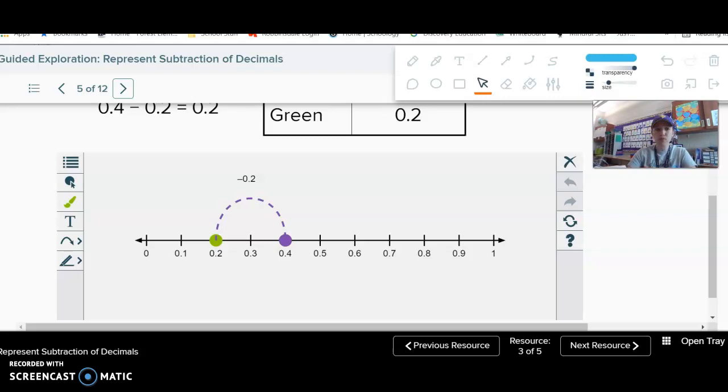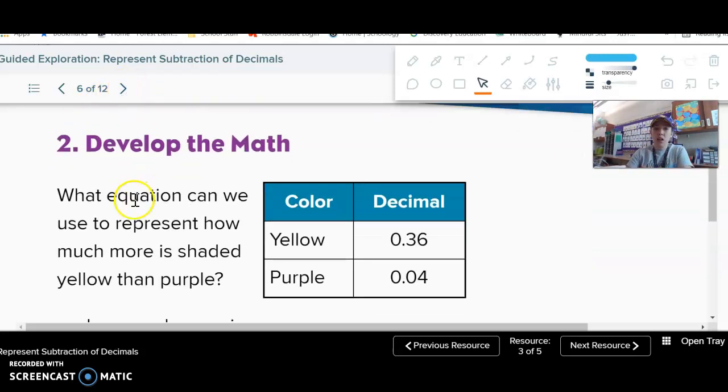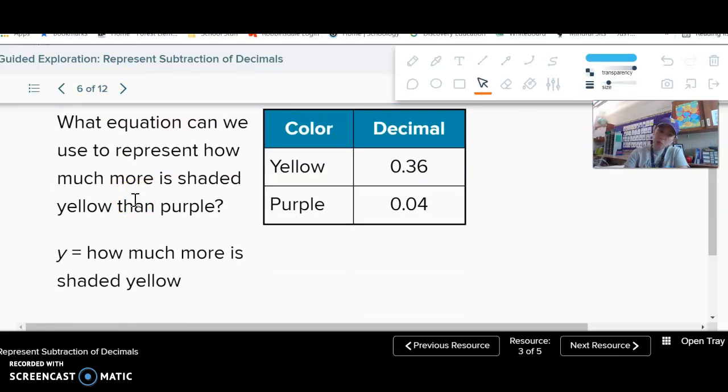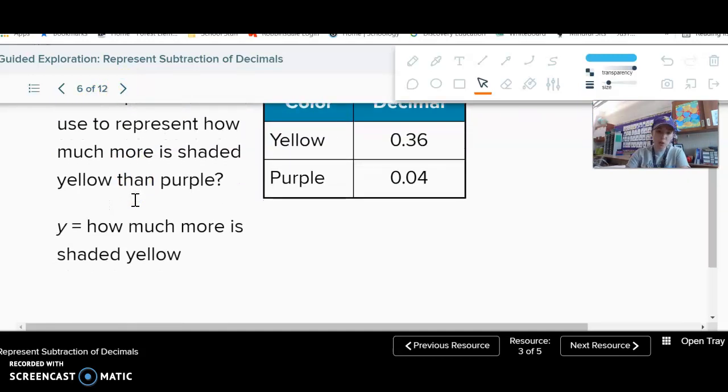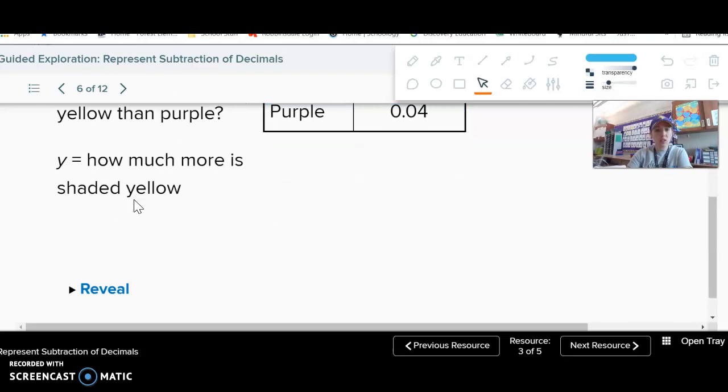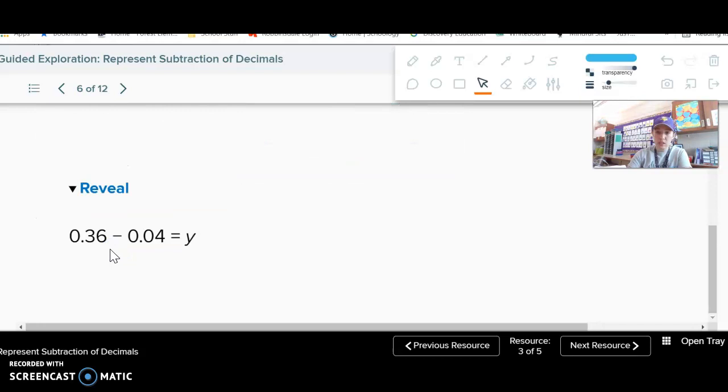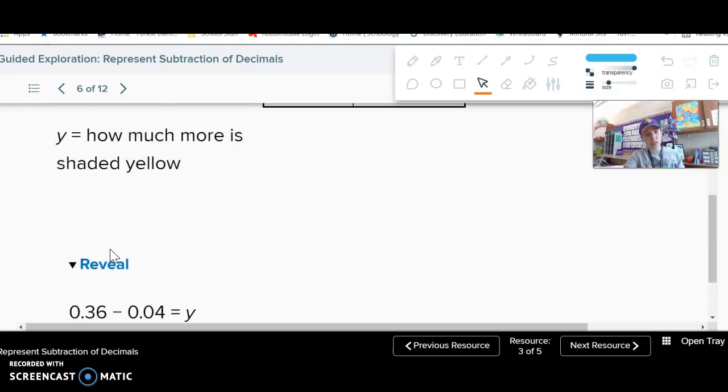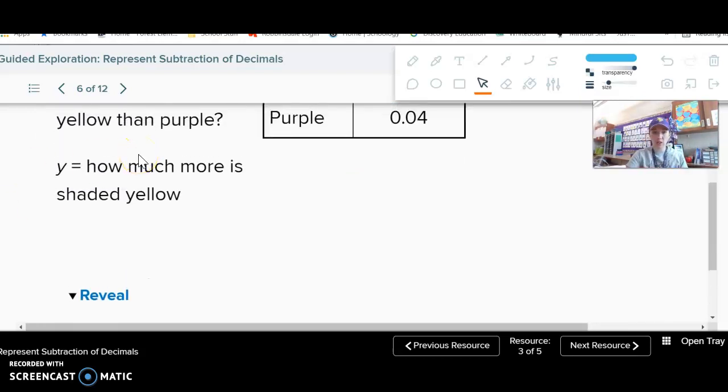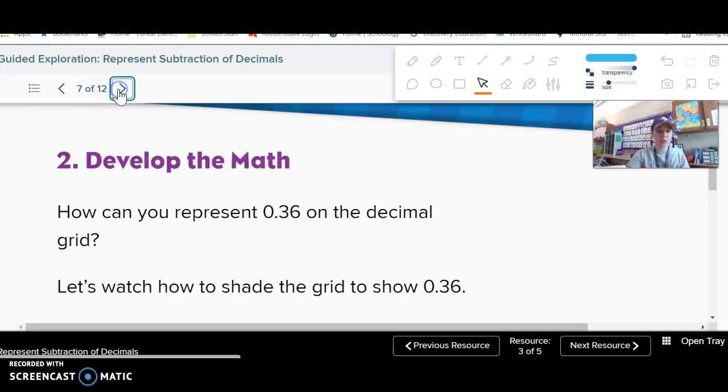Now, yellow versus purple - how much more shaded yellow than purple? How could we write an equation? Well, I could take the yellow amount subtract the purple amount. So 0.36 minus 0.04 equals y, which is the letter they told me to use. We'll talk more about letters when we get to algebra, those variables, if you forget what those mean.